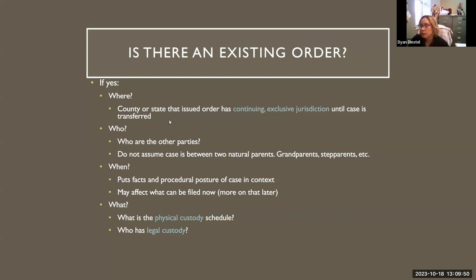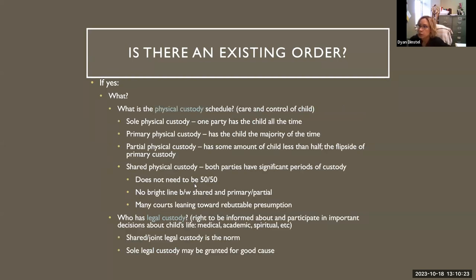You'll want to find out when the most recent existing order is from. It could be very recent, or it could be an order from 15 years ago when the parties have been doing something entirely different for the past 14 years. You'll want to know what the order provides for: what's the physical custody schedule and who has legal custody. Physical custody is who has the care and control of the child, and typically when lay people refer to custody, this is what they're referring to.